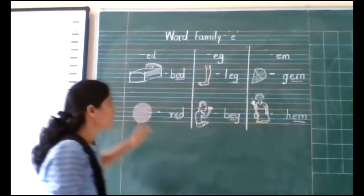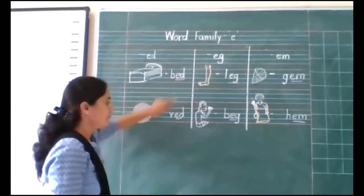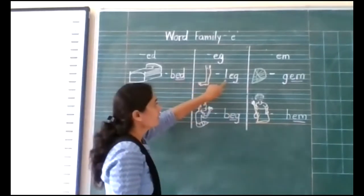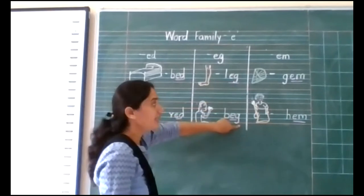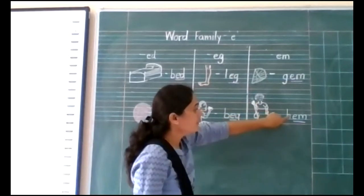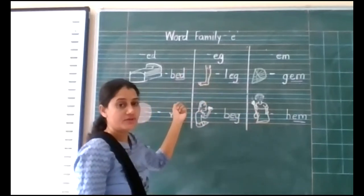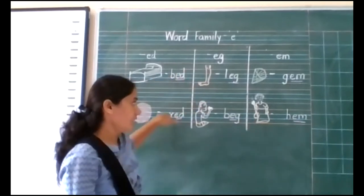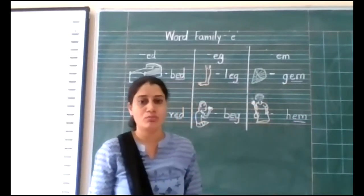Now, students, all of you repeat after me all these words. Now, you have to copy all these words in your English notebook, full page. Which words? Bed, red, leg, beg, gem, hem — write these in your English notebook, full page.